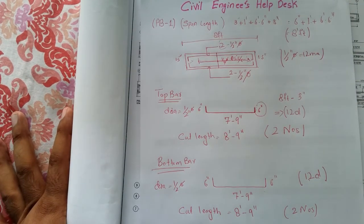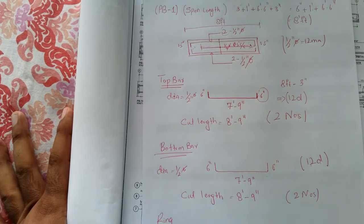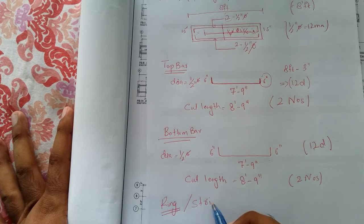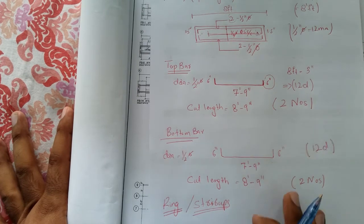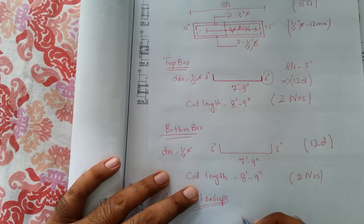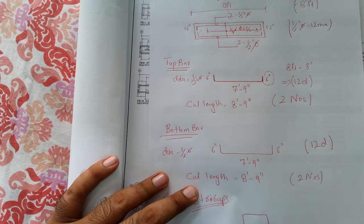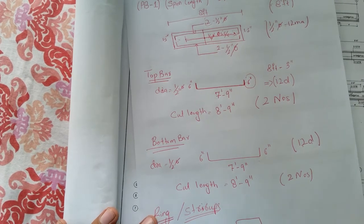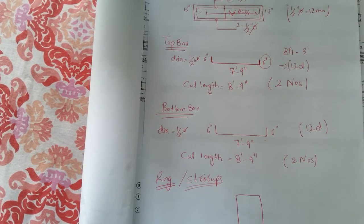Now we will work for the ring, also called a stirrup. I use the term 'ring' because most steel fixers use that term. I will draw the stirrup diagram — it will have hook lengths, one at 145 degrees and one at 135 degrees. I have a separate video on ring calculation posted last month, which you can also watch.